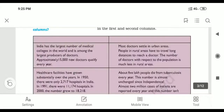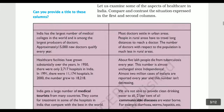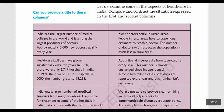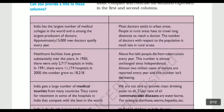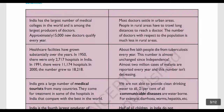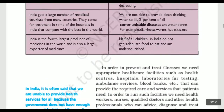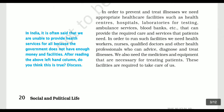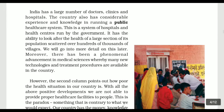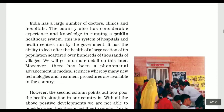In this video we will discuss the remaining chapter on the role of the government in health. In the last video we discussed this table, where the first column has some positive points about the Indian healthcare system and the second column has some disadvantages. So the second column is in contrast with the first column. We have covered up to here and will now start from this point.